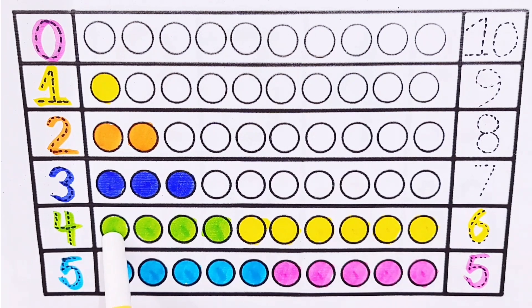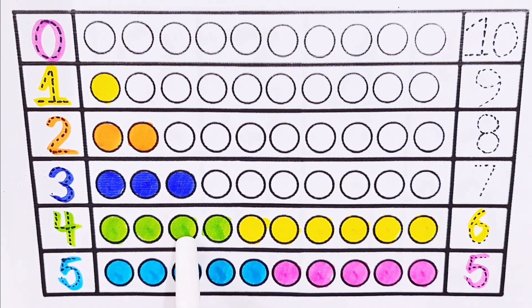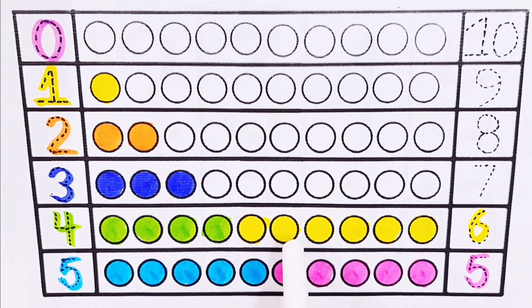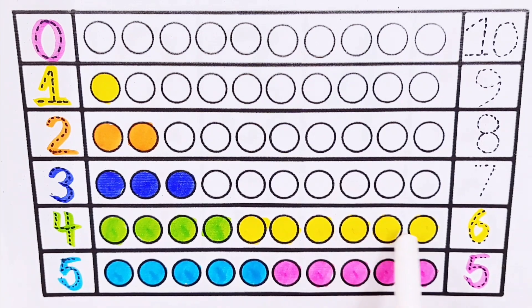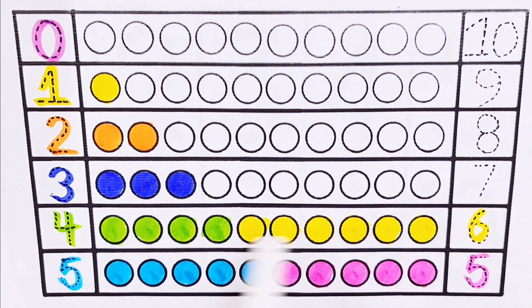One, two, three, four, five, six, seven, eight, nine, ten. Four plus six equals ten.